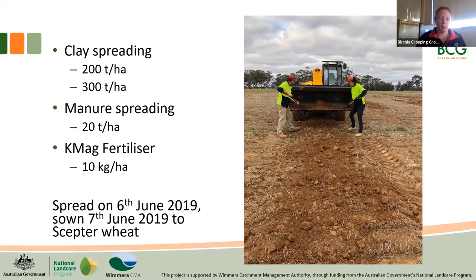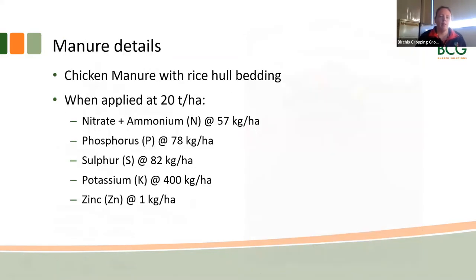Something important to note is that we spread our clay and manure on the 6th of June and then sowed straight into it the next day on the 7th of June, to Scepter wheat. The manure applied was a chicken manure with rice hull bedding. At 20 tonnes per hectare, this was the equivalent of putting out 57 kg/ha of nitrogen, 78 kg/ha of phosphorus, 82 kg/ha of sulfur, 400 kg/ha of potassium, and 1 kg/ha of zinc — basically throwing a lot of nutrients at the plots that got the chicken manure treatments.